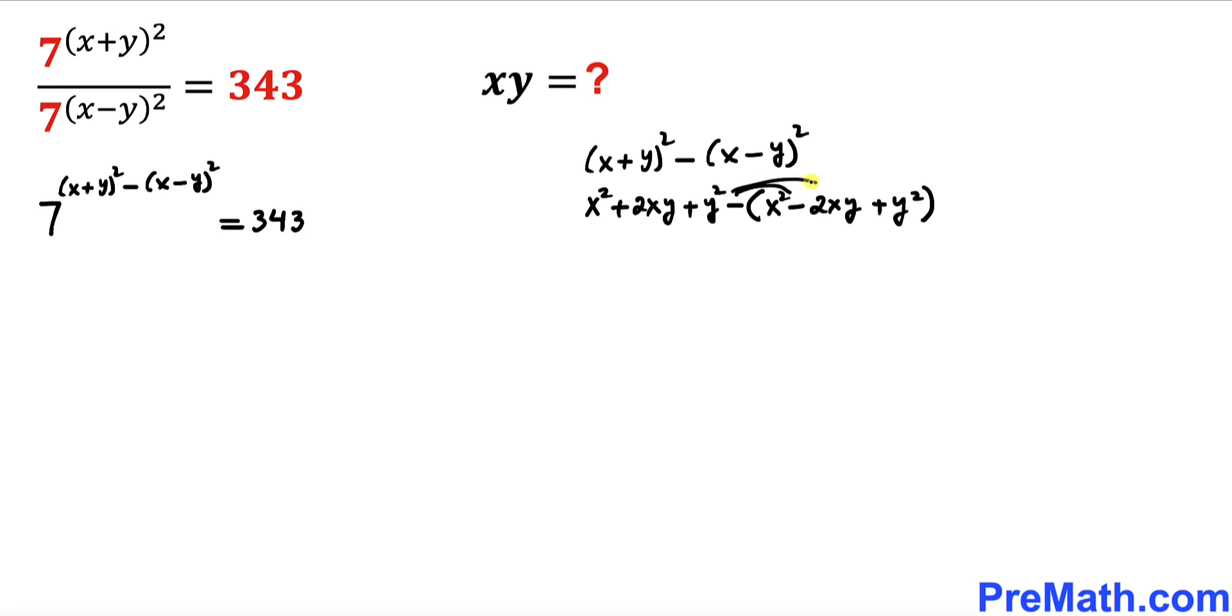Now let's distribute this negative sign. So therefore we have x² + 2xy + y² - x² + 2xy - y². We can see x² and x² cancel out, and y² and negative y² cancel as well. So we simply end up with 2xy + 2xy, which gives us 4xy. Therefore this whole thing has been simplified to 4xy.